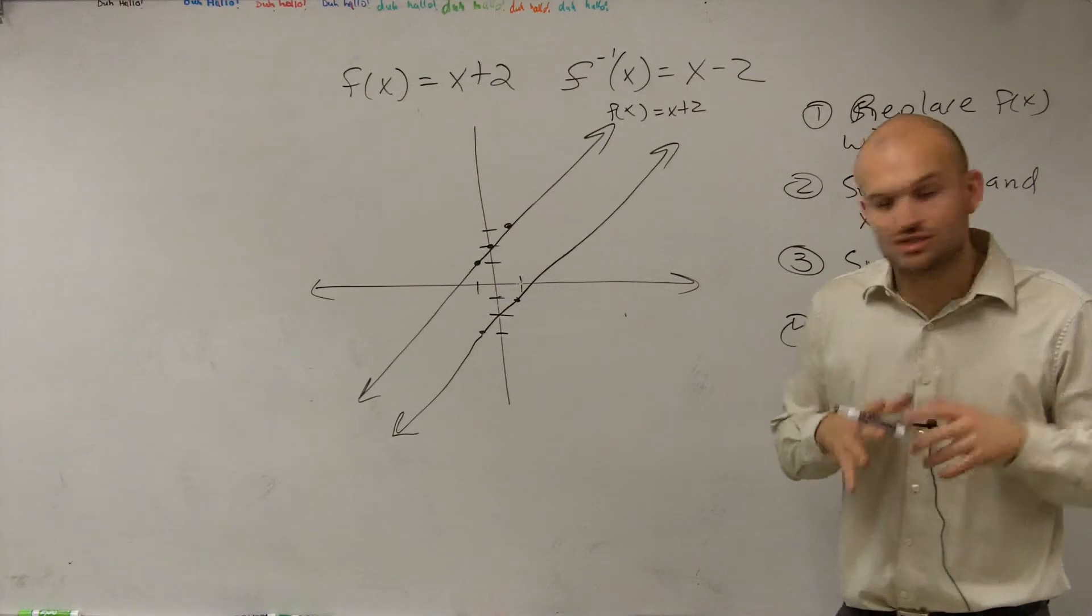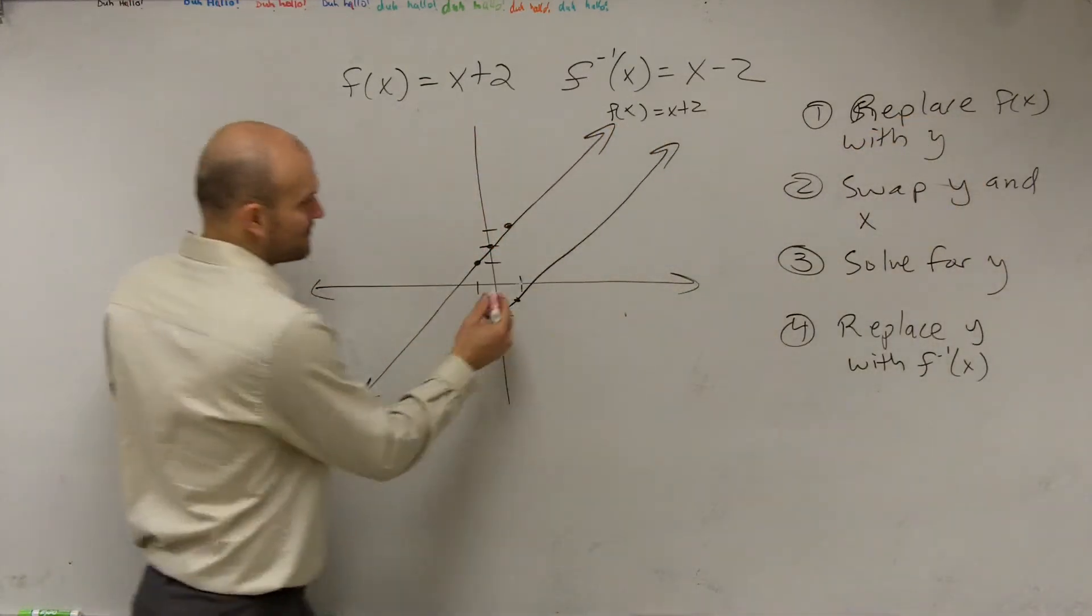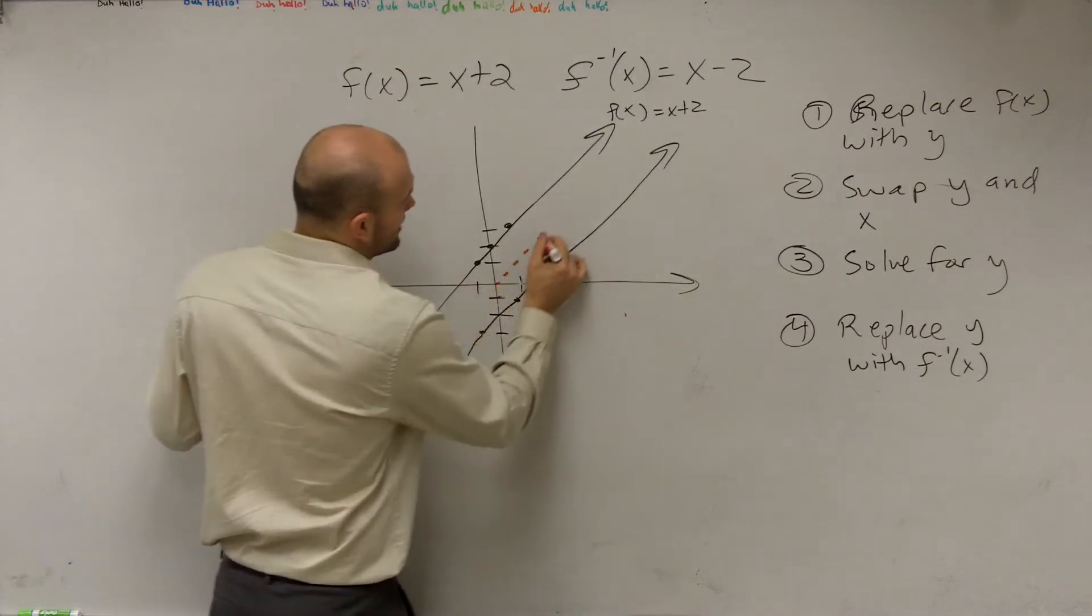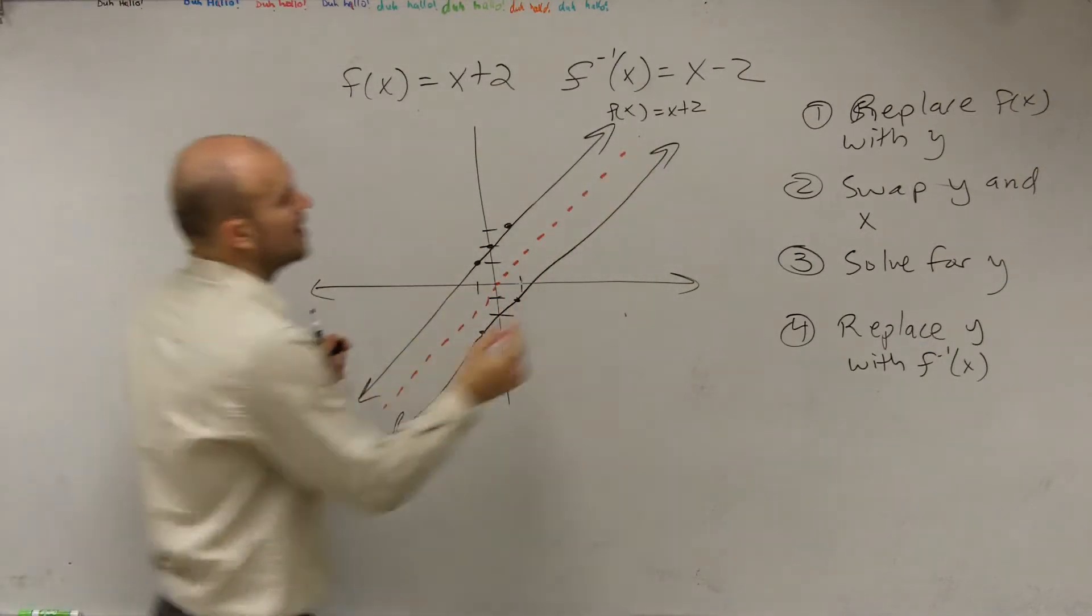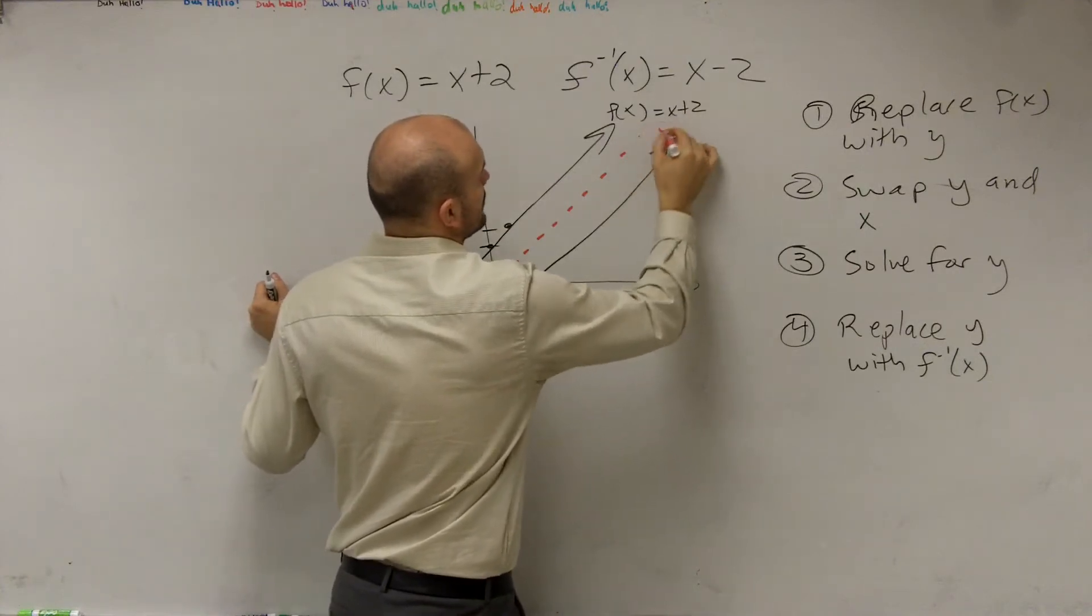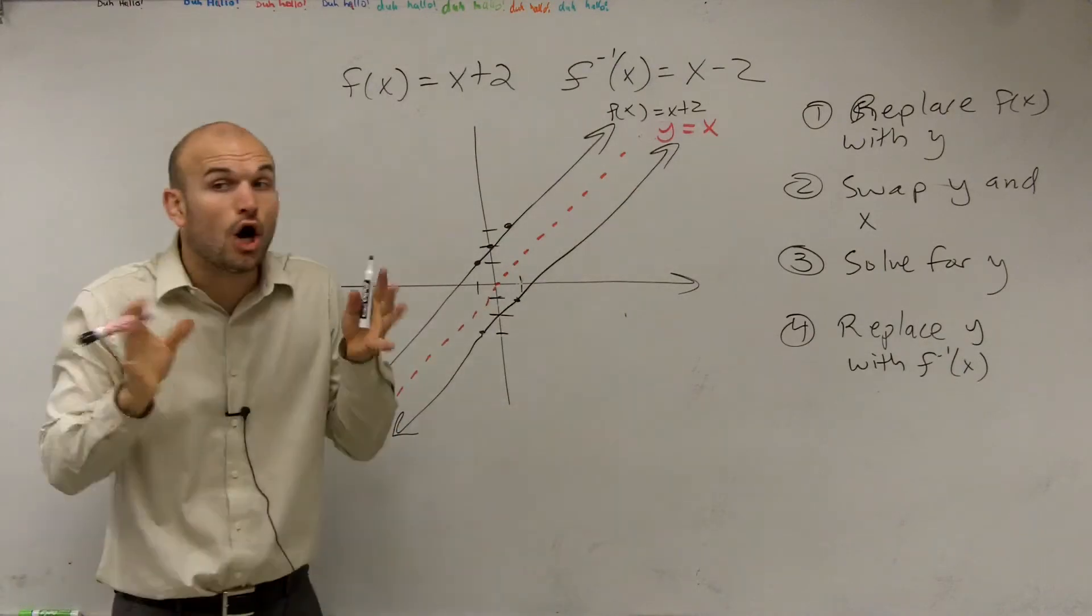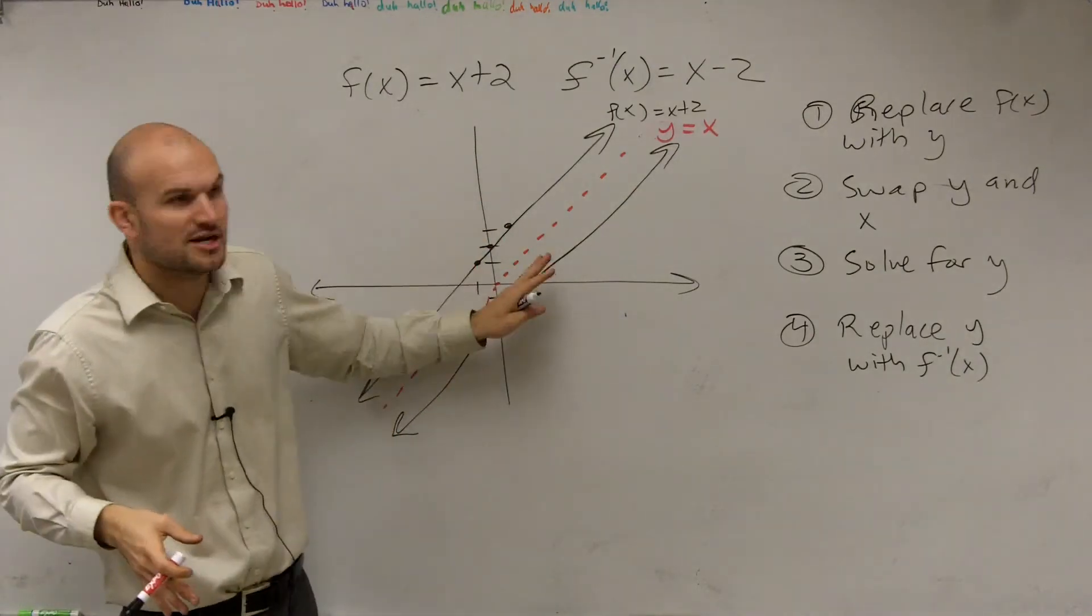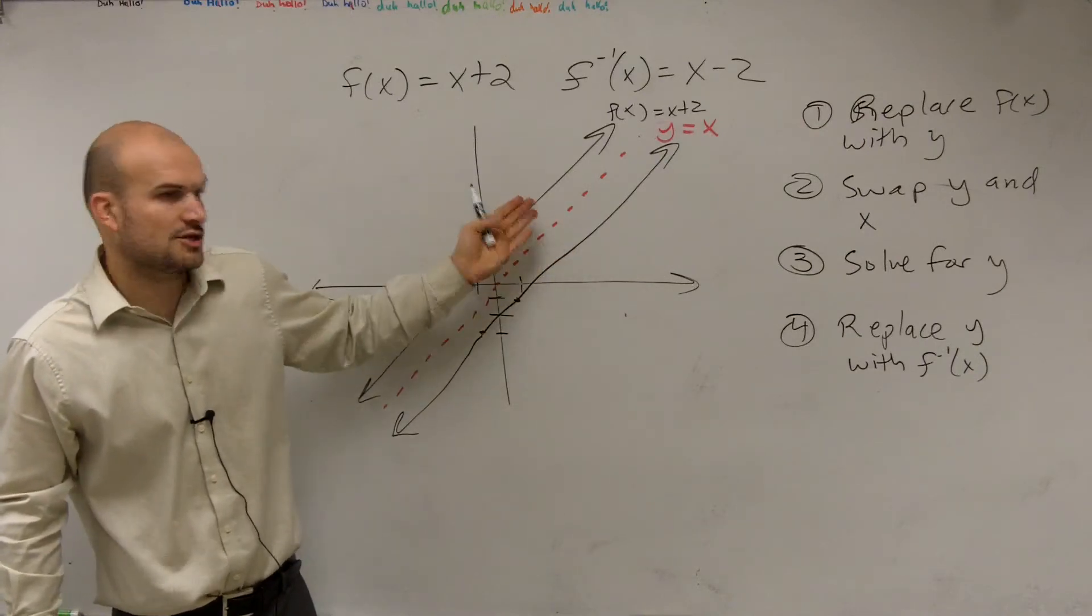But what inverse functions do is they provide us with a reflection over a line. They are reflected over each other, over what we call the f of x or y equals x line. So all inverses, this case is special because these are actually parallel lines.